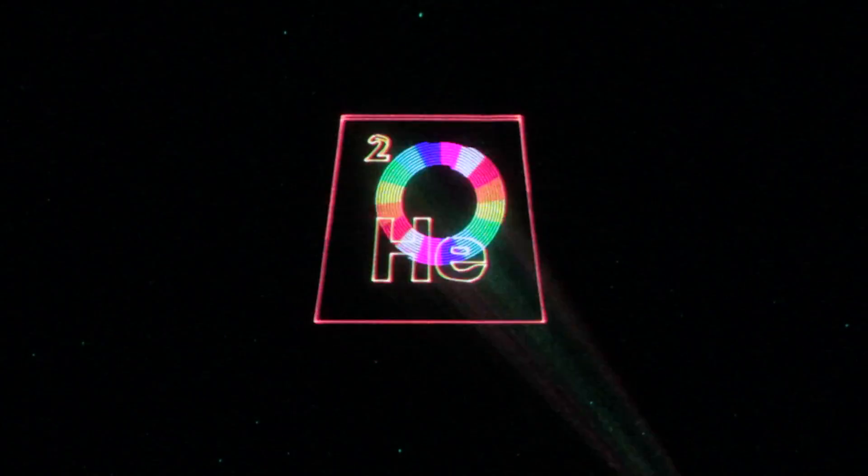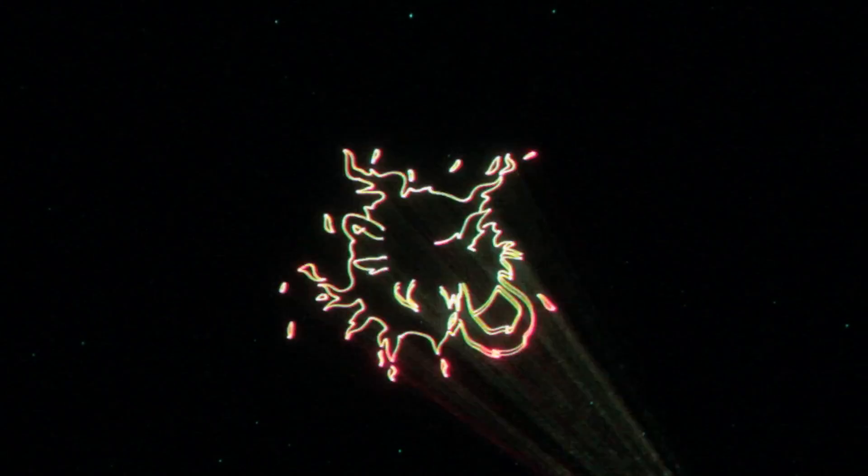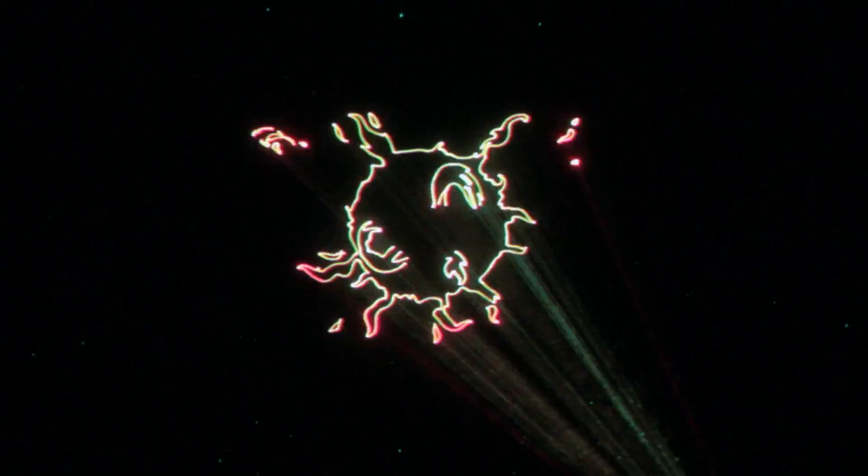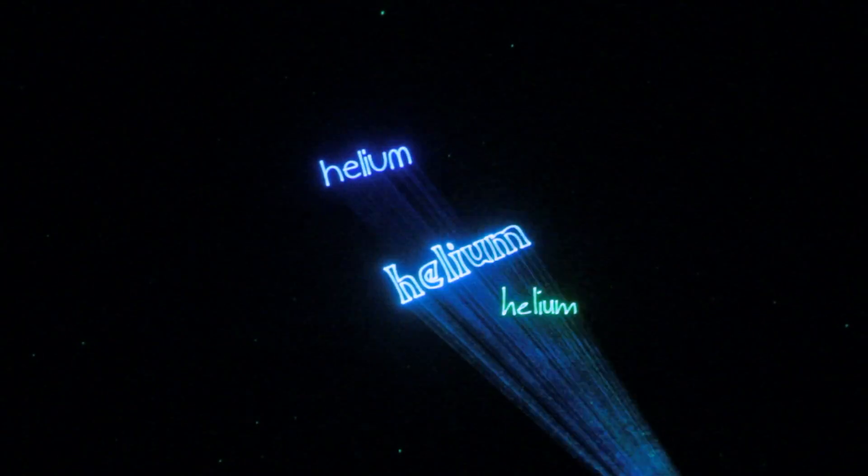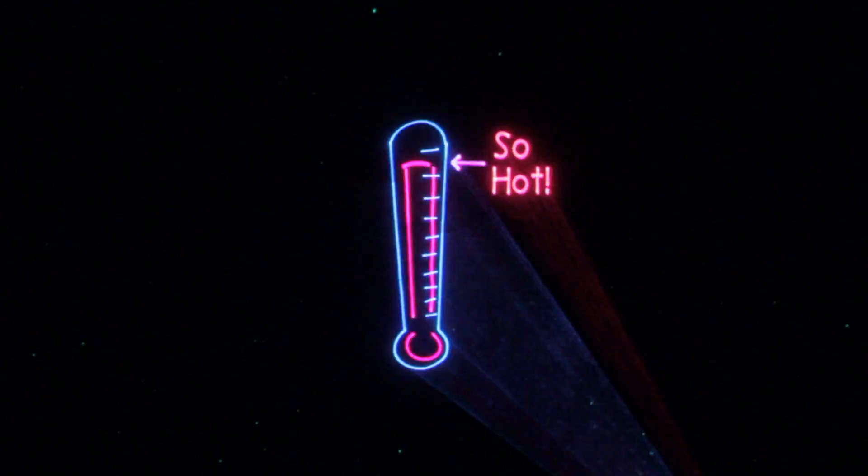The sun is a mass of incandescent gas, a gigantic nuclear furnace where hydrogen is built into helium at a temperature of millions of degrees.